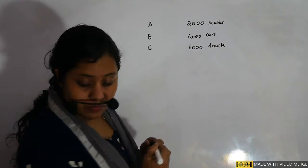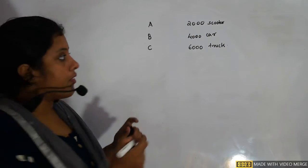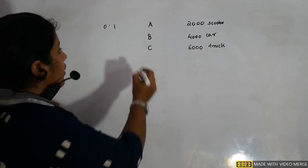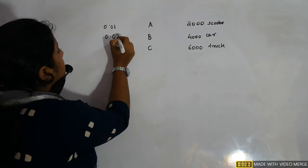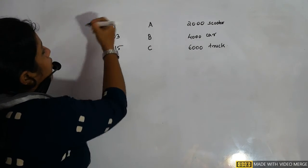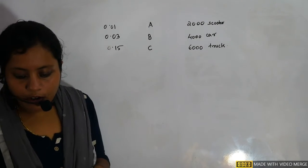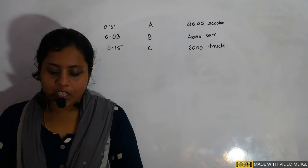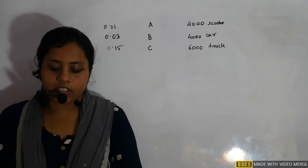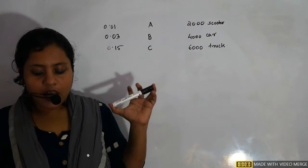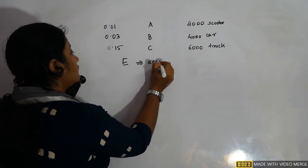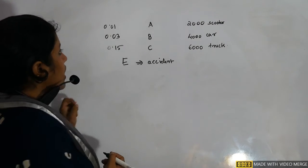One of the insured persons meets with an accident. We need to find the probability that the person is a scooter driver. Let E be the event of an accident occurring. We need to apply Bayes' theorem since we have three events and a resulting event.